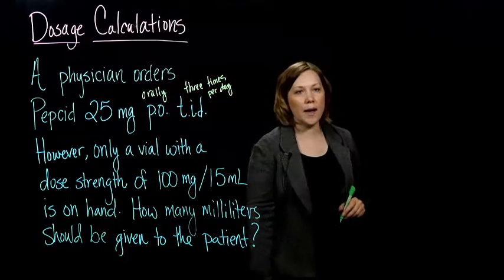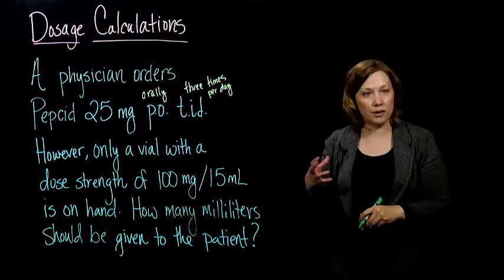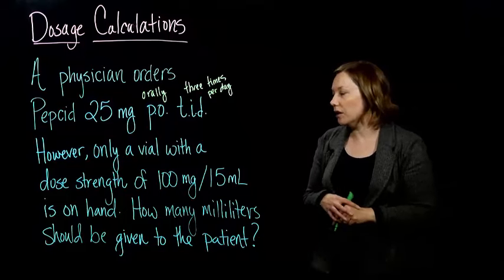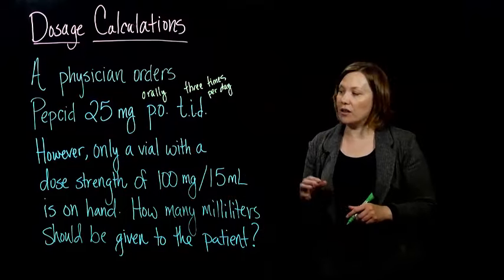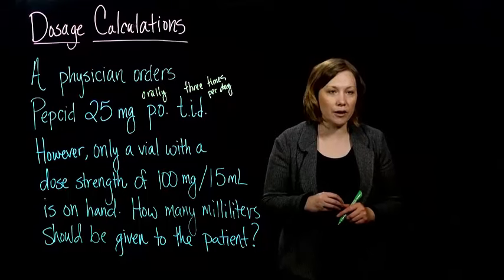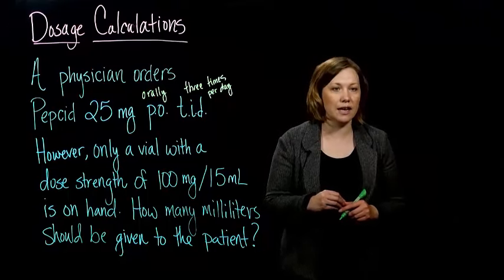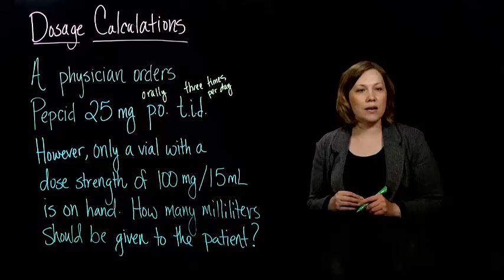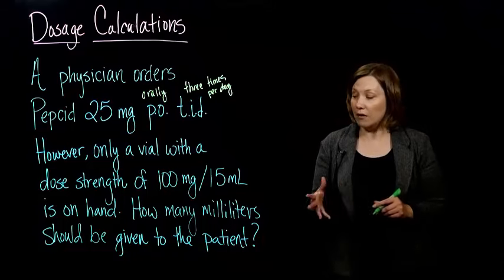Okay, so looking back up on that table with abbreviations, we can figure those out. However, only a vial with a dose strength of 100 milligrams per 15 milliliters is on hand, and we want to figure out how many milliliters we should give to the patient.